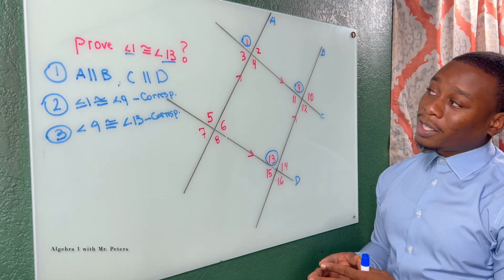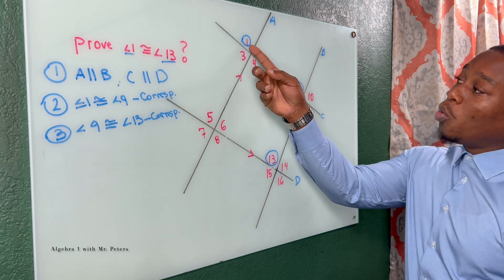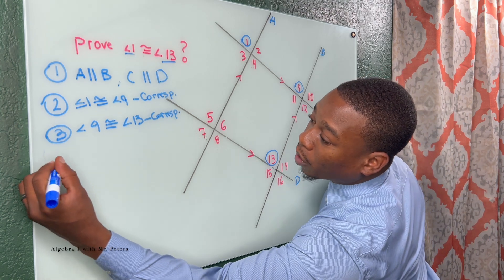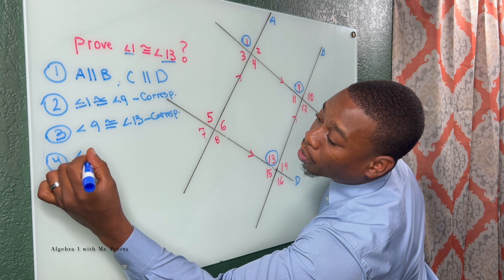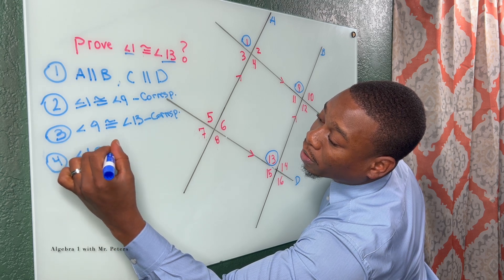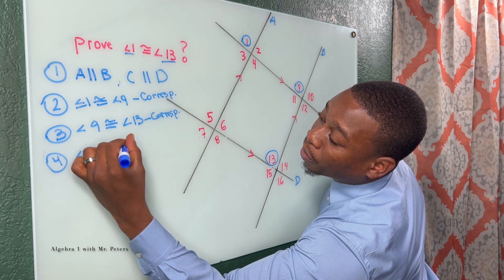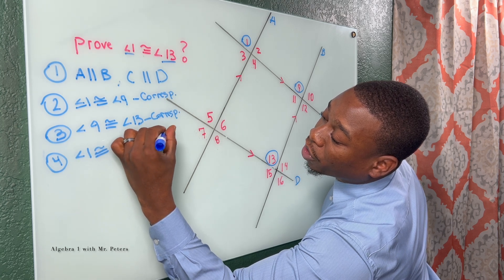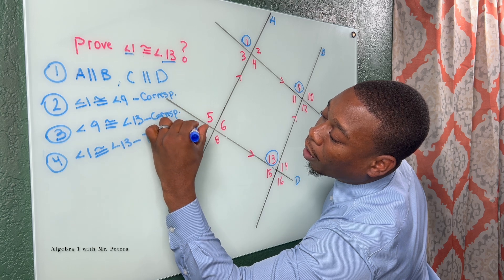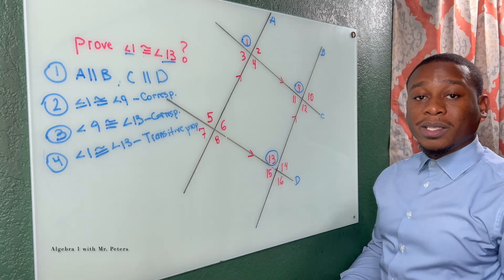So now how would I tie the connection between angle 1 and angle 13? And this is how we do it. I would say angle 1 is congruent to angle 13 because of what? The transitive property. And then I'll be done.